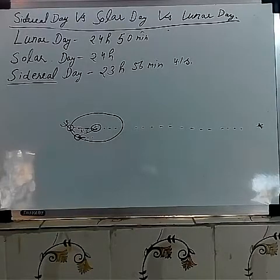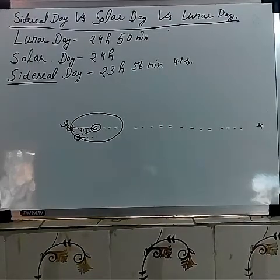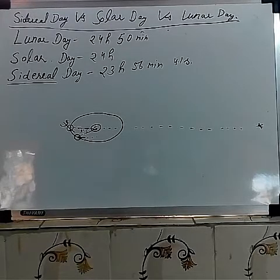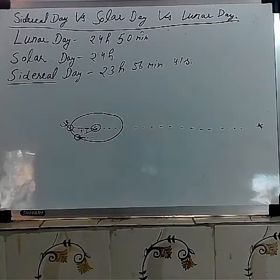Hello friends, welcome to Learning Class. Today we will discuss the difference between lunar day, solar day, and sidereal day, and why there is a difference in timing. The lunar day has 24 hours 50 minutes, the solar day has 24 hours, and the sidereal day has 23 hours 56 minutes and 4.1 seconds.